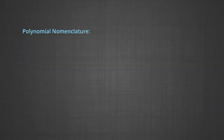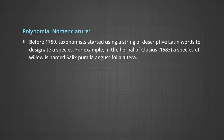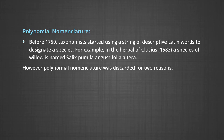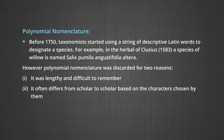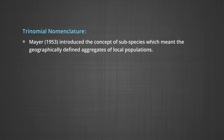Polynomial nomenclature: before 1750, taxonomists used a string of descriptive Latin words to designate a species. For example, in the herbal of Clusius (1583), a species of willow is named as Salix pumilia angustifolia altera. However, polynomial nomenclature was discarded for two reasons: it was lengthy and difficult to remember, and it often differed from scholar to scholar based on the characteristics chosen by them.